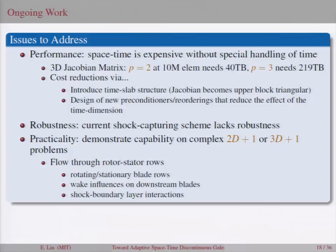And this is ongoing work. And kind of like the downsides of space-time methods is that they're really quite expensive compared to just spatial problems because you end up having to store a lot more information. And that's some of the things I'm trying to address right now. Like, for example, if I were to store the 3D Jacobian matrix for p equals 2 solution at 10 million elements, that would require 40 terabytes of memory. The p equals 3 would require 219 terabytes, which is just unreasonably large. And there's a number of things you can do to try and reduce these things down, like introducing a time slab type structure, which would make the Jacobian matrix upper block triangular. And on top of that, we'll also need a whole slew of new linear solver techniques that will reduce the cost of that phase of the problem in order to make this whole scheme even reasonably practical. And our solver at the moment also has substantial robustness problems when there are strong shocks, which is quite bad for us, but something else I need to work on.